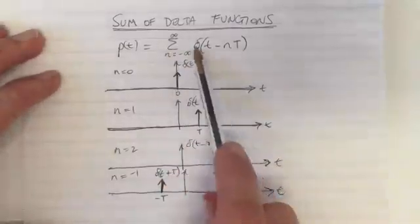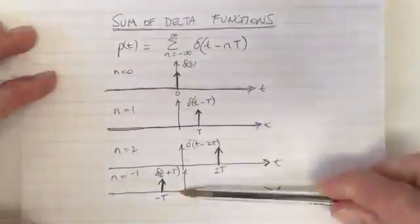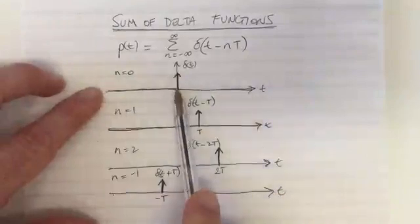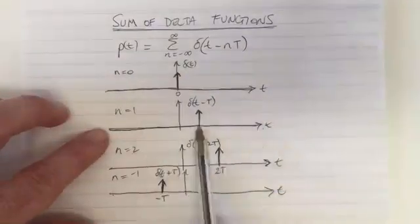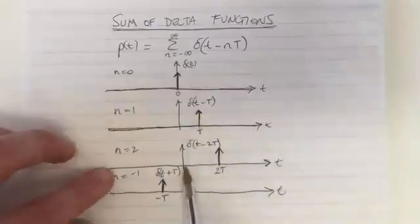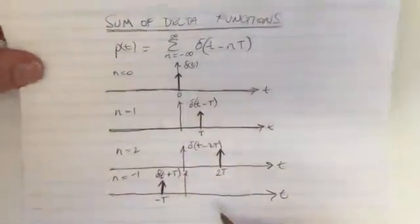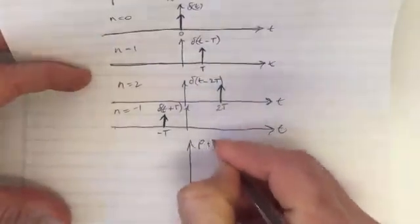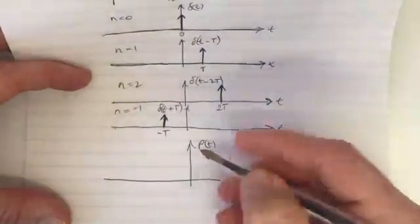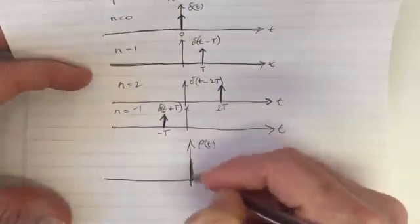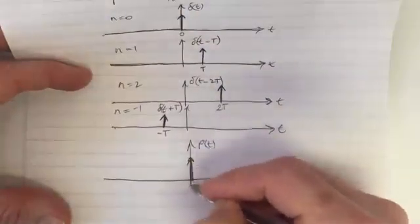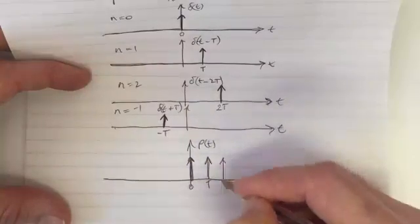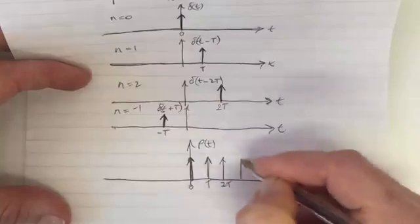This summation says we add up all these functions. So we add all of these together. This function, which is zero everywhere, has a delta function there, plus this one, which is zero everywhere that has a delta there, plus this one, plus this one, gives us an overall function p of t, which is the addition of all those functions. There's a delta function at zero, at T, at 2T,